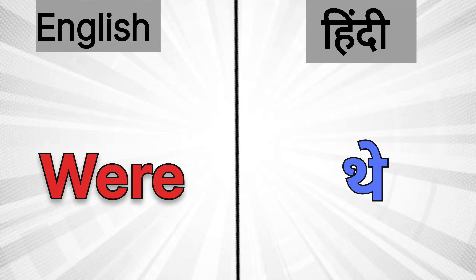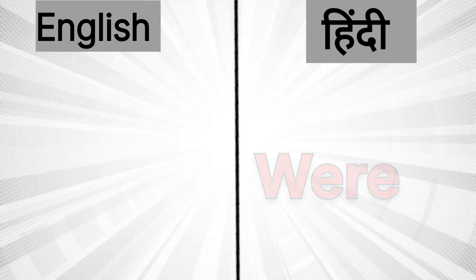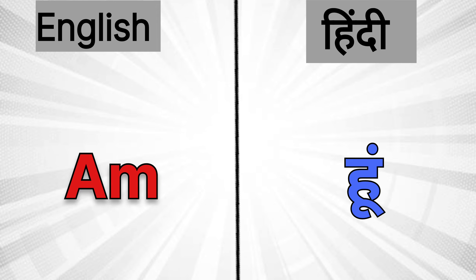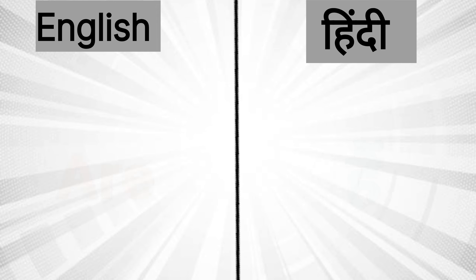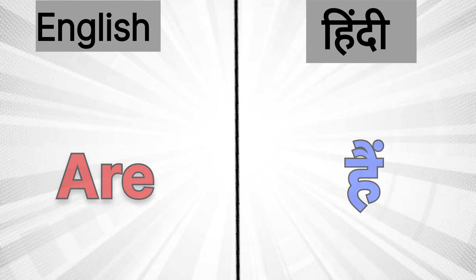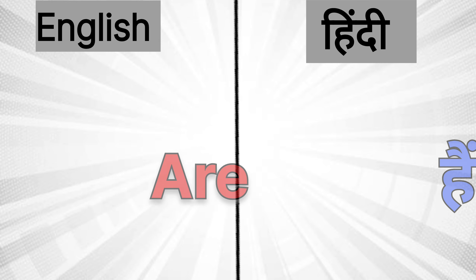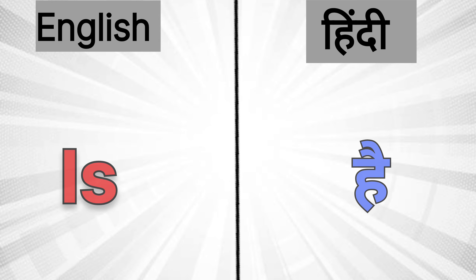In English: 'var' (were) — In Hindi: thay. In English: 'am' — In Hindi: who (hoon). In English: 'are' — In Hindi: ha (hain). In English: 'is' — In Hindi: ha (hai).